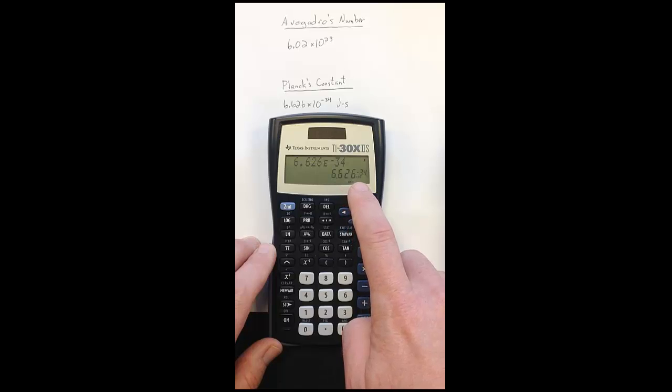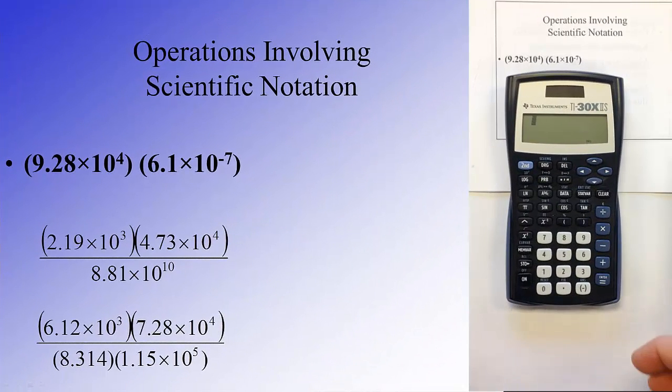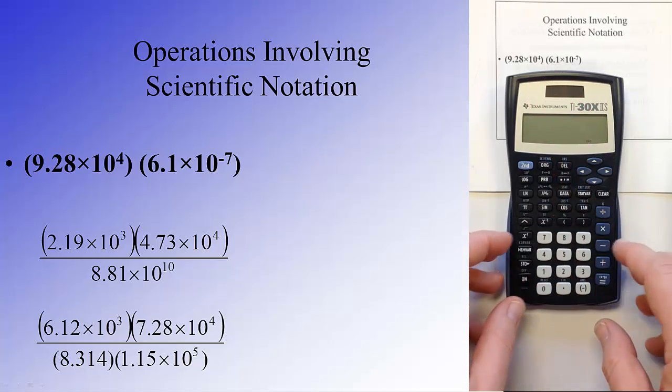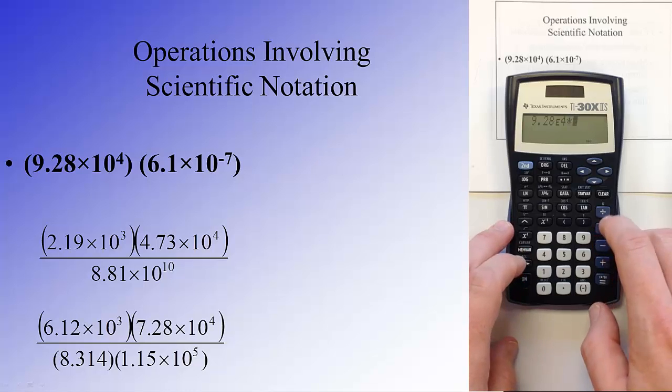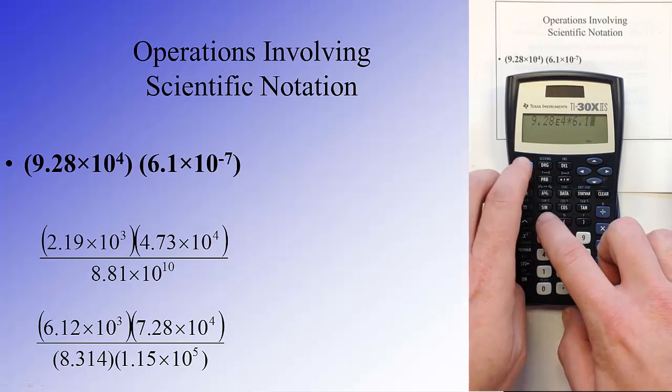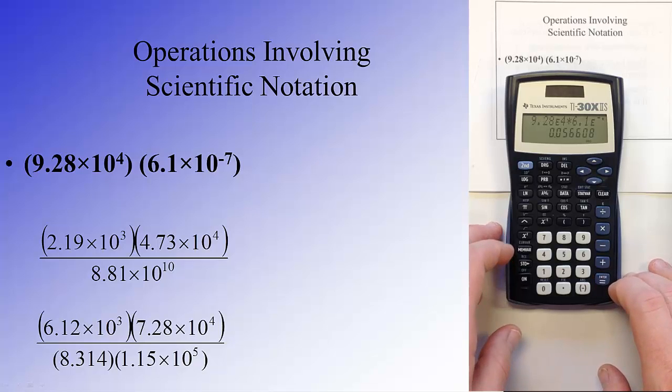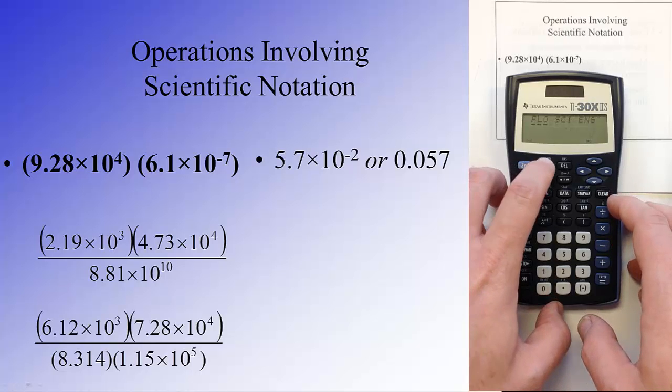When we do calculations with scientific notation, we want to be careful of the order in which we input the terms that we're using. In a straight-up multiplication, it's not too difficult. We put in the base number 9.28, second EE, and then the power of 4. Then we multiply it by the second term, 6.1, exponent function, and we're going to do a negative 7 this time. When we evaluate that, we get 0.056608, which if we rounded to two digits because of our second term there—we'll talk about significant figures in a later lesson—but we would just round this off to 0.057, or if we put it into scientific notation mode, you would get that as 5.7 times 10 to the minus second power.